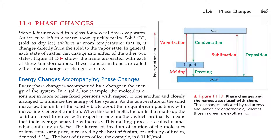Section 11.4, Phase Changes. Water left uncovered in a glass for several days evaporates. An ice cube left in a warm room quickly melts. Solid carbon dioxide sold as dry ice sublimes at room temperature — that is, it changes directly from the solid to the vapor state. In general, each state of matter can change into either of the other two states. These transformations are called either phase changes or changes of state.